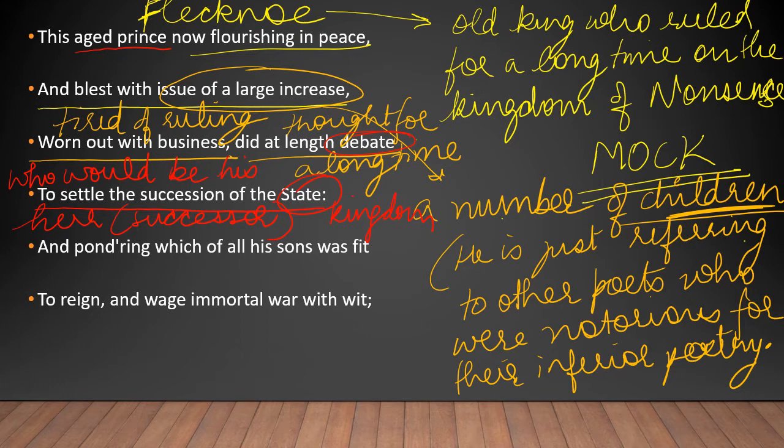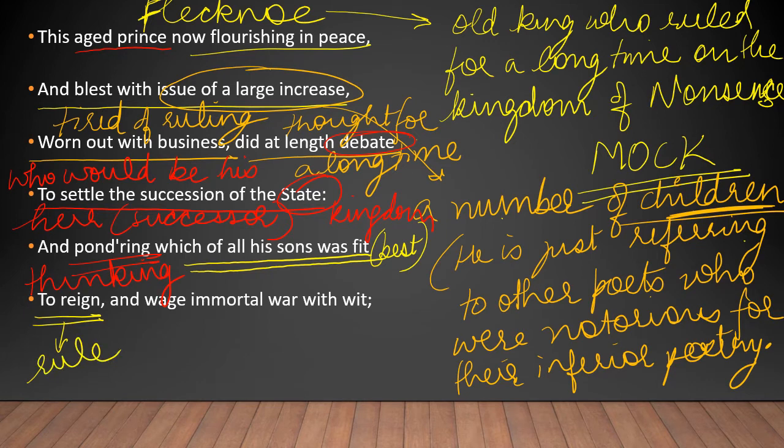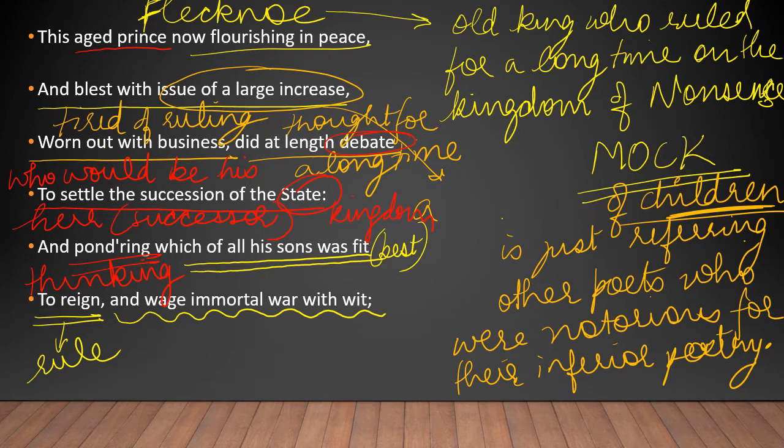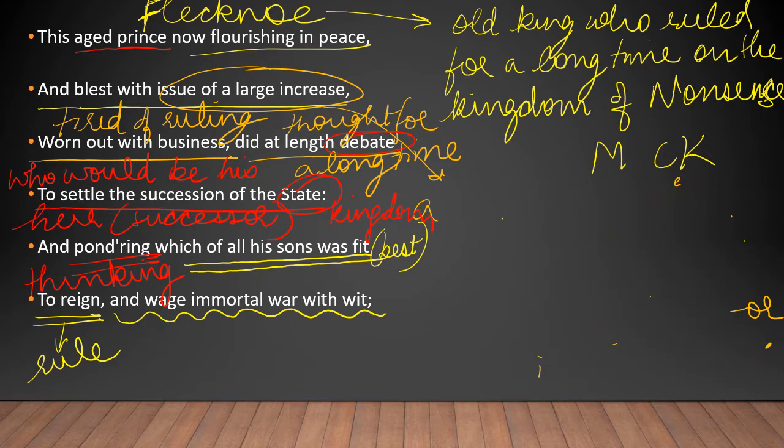Pondering means thinking. He thought for a long time, thinking which of all his sons was fit. The problem was that the king had many sons and they were all capable of becoming the kings of nonsense, so it was very difficult to decide which was best to reign.